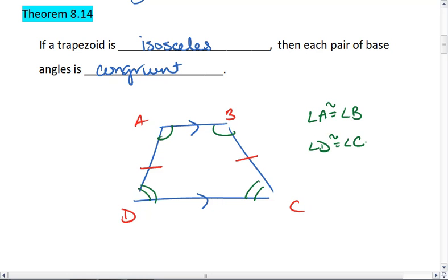Note that A and D are not congruent. They're actually supplementary. And that's because we have two parallel lines cut by a transversal.